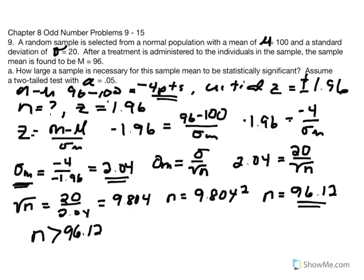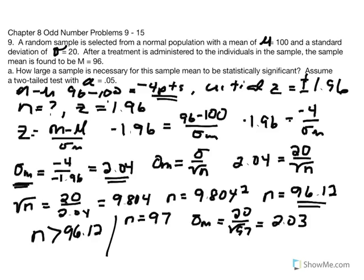To illustrate: if n equals 97 (greater than 96.12), then our standard error of the mean equals 20 over the square root of 97, giving us something close to 2.03. Notice the effect — I increased n and the standard error decreased. Then our z value equals 96 minus 100 divided by 2.03, giving a z score of negative 1.97.